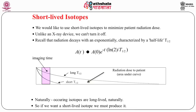If we look at this particular picture, it shows imaging time represented by a block. You have administered the activity and imaging is over. But if the isotope used has a long half-life, it remains in the body. It is of no use to the body because scanning is over — you have got the information — but it is unnecessarily giving a dose. So we would like to use short-lived isotopes to minimize patient radiation dose. Unlike an X-ray device, we cannot simply turn it off.